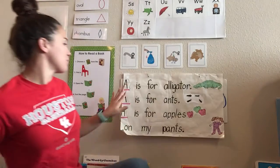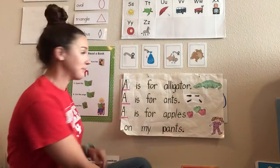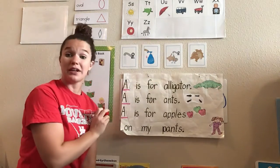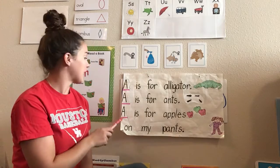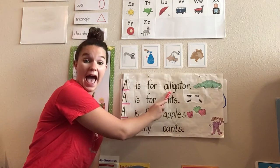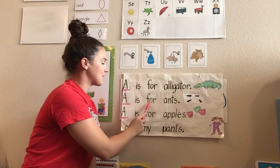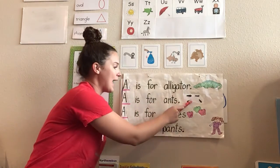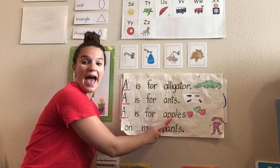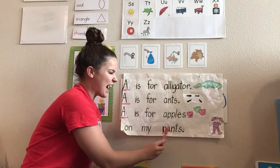Now it's time to read our poem all about the letter A. All right, here we go. You can follow along if you would like. Here we go. A is for ah, ah, alligator. A is for ah, ah, ants. And A is for ah, ah,